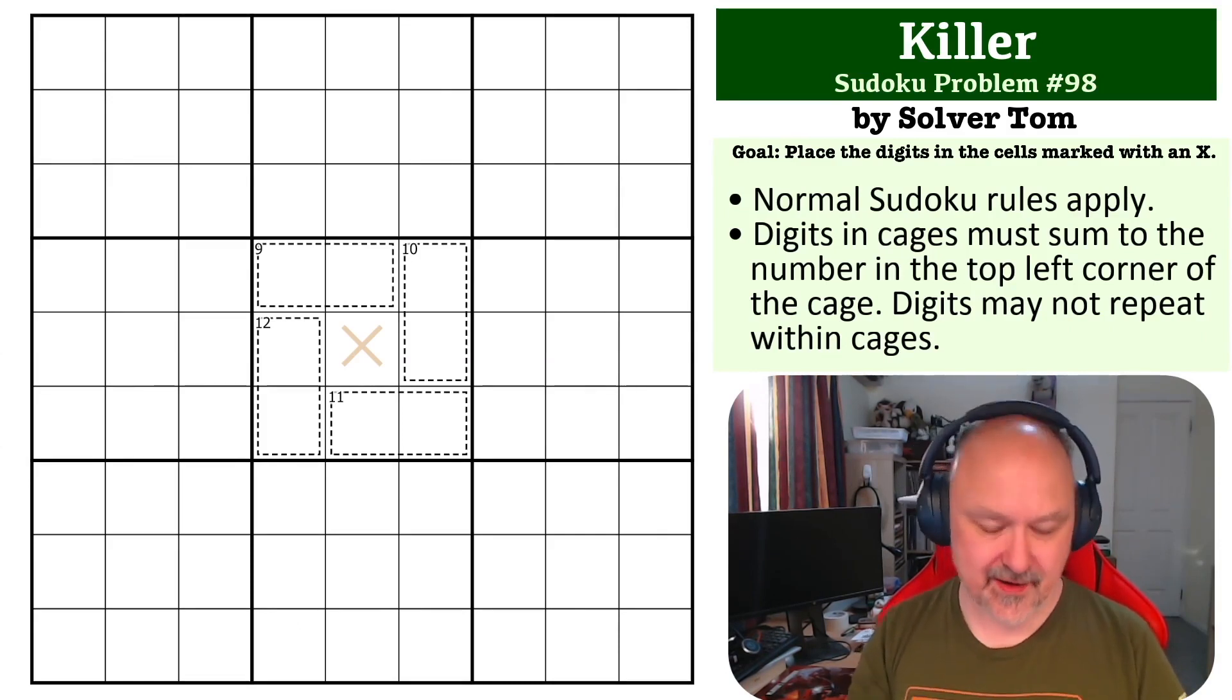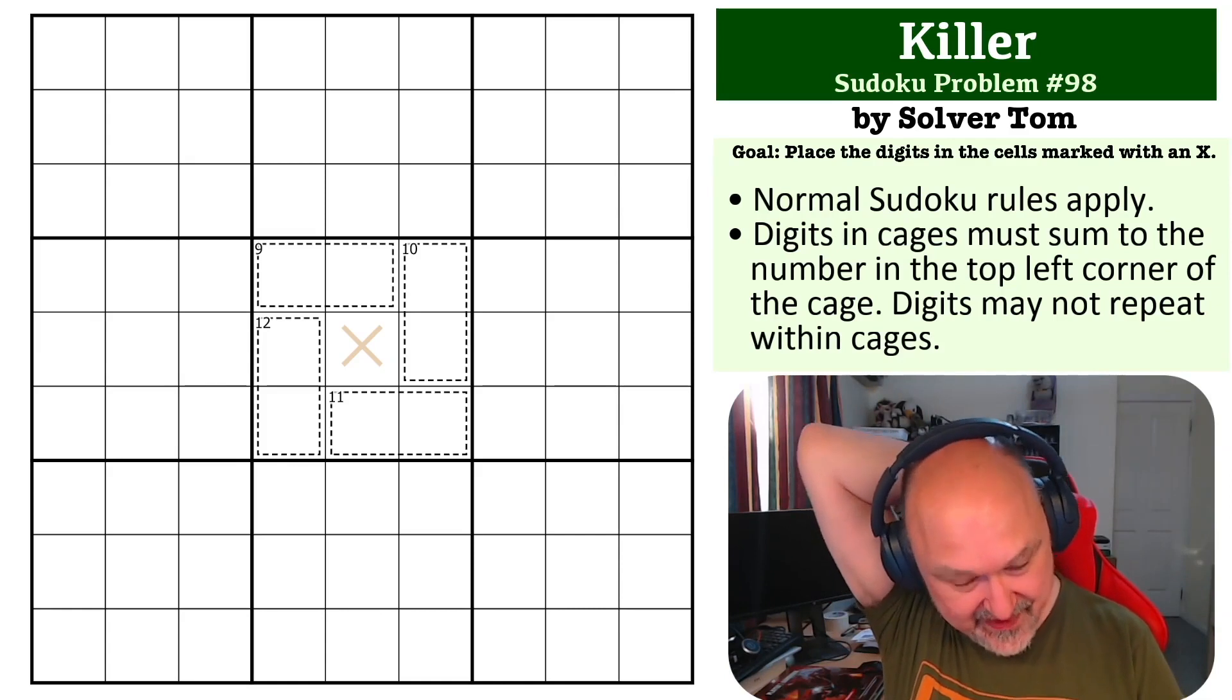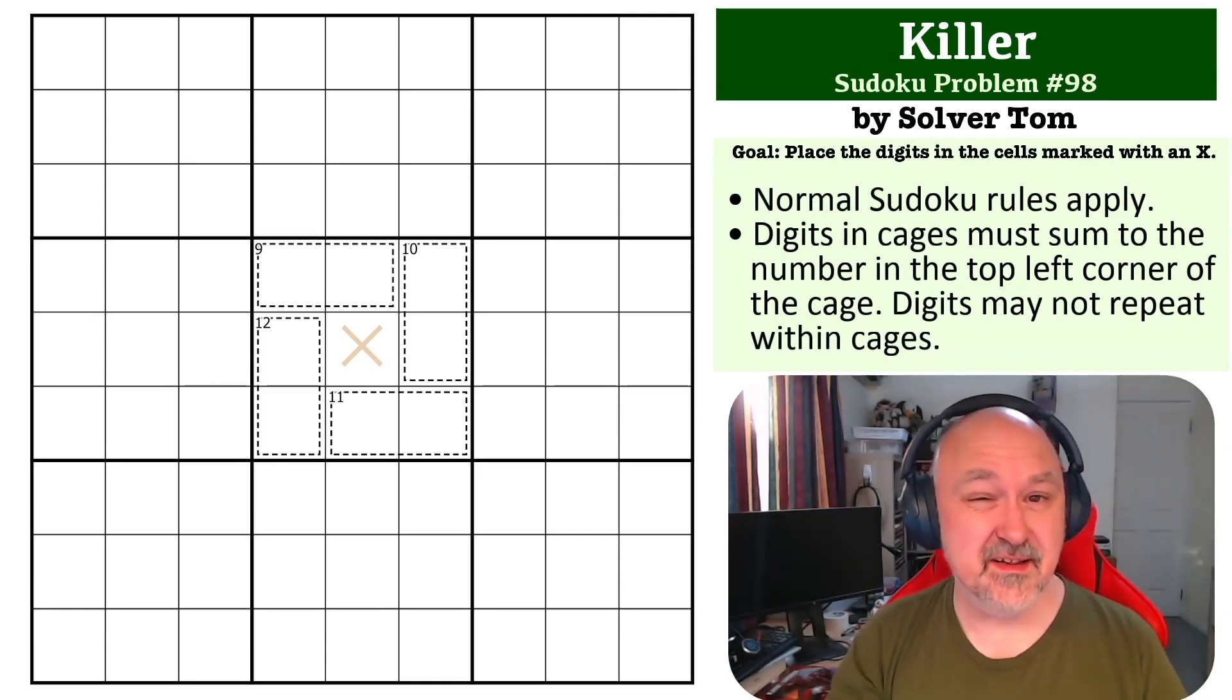For sending this one through. If you want to find that first one, you'll have to download the Skilling Sudoku pack and look at the cover. Anyway, this is a Killer Sudoku problem, so the digits in the cages must sum to the number in the top left corner of the cage, and the goal is to place the digit in the cell marked with an X. There's a link below where you can get a copy of this grid if you need it.